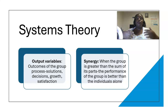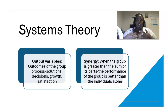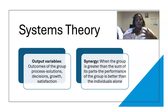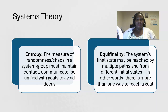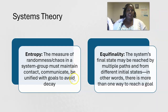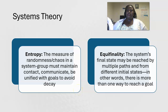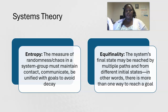Synergy is when the group and what they produce is greater than the sum of its parts. Yes, we can do certain things alone, but it's better when we work together. Then we have entropy — the randomness and chaos within the system. What chaos can happen in a group?